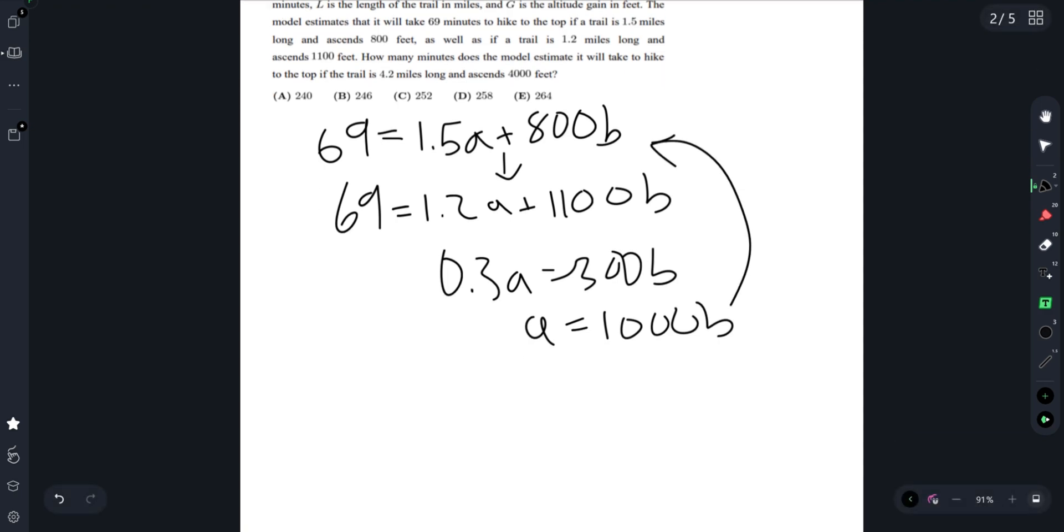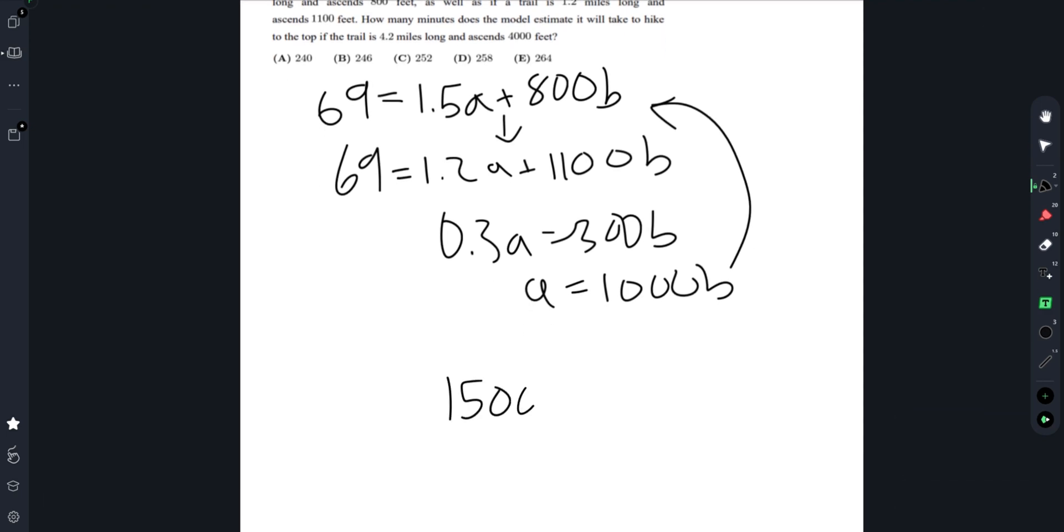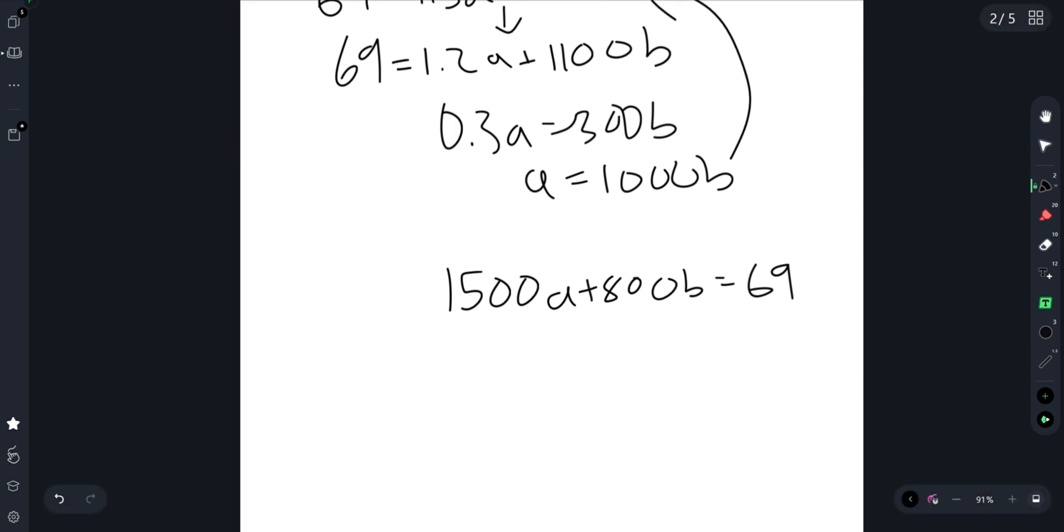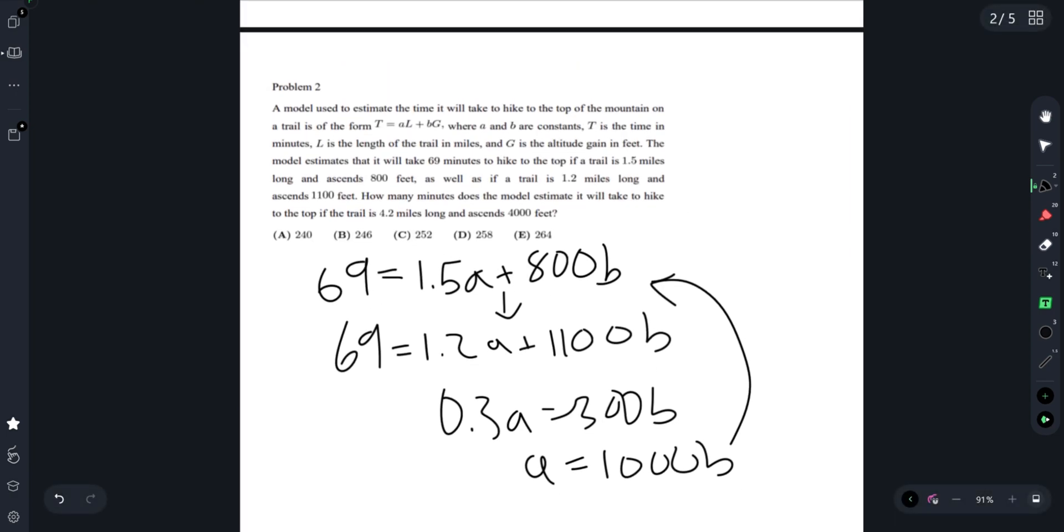Plugging it back into this equation, we get 1500B plus 800B equals 69, so we get B equals 3 over 100, and that means A equals 30.